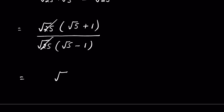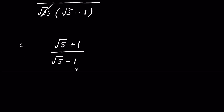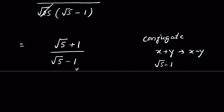After canceling, we have square root of 5 plus 1 upon square root of 5 minus 1. To further simplify, we need to rationalize the denominator. To rationalize, we multiply and divide by the conjugate of the denominator. The conjugate of x plus y is x minus y, so the conjugate of square root of 5 minus 1 is square root of 5 plus 1.